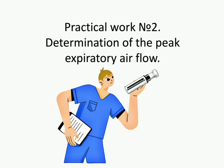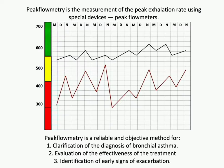Practical Work Number 2: Determination of the Peak Expiratory Air Flow. Peak flowmetry is the measurement of the peak expiratory flow rate using special devices called peak flow meters. Peak flowmetry is a reliable and objective method for clarification of the diagnosis of bronchial asthma.